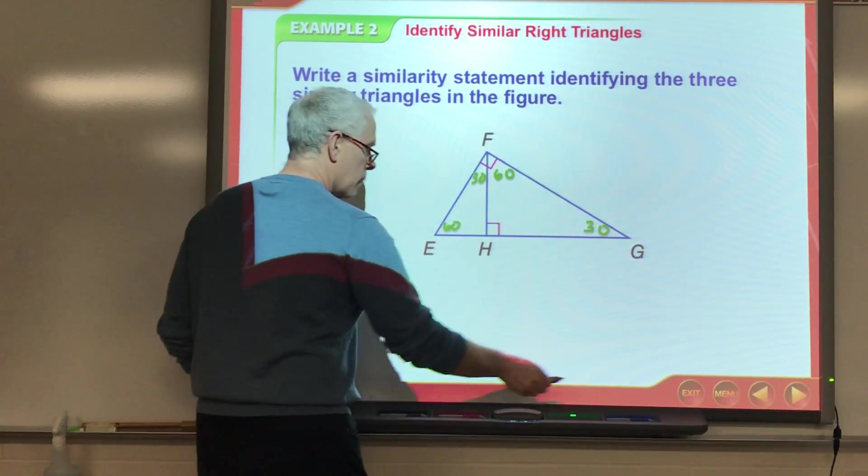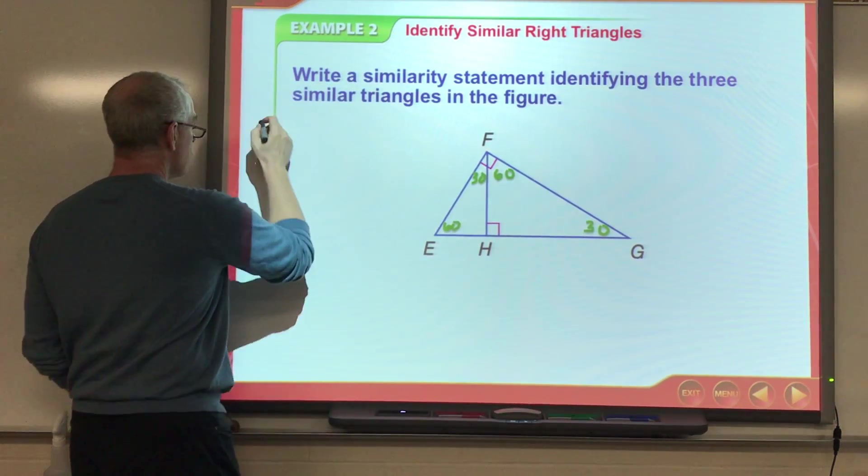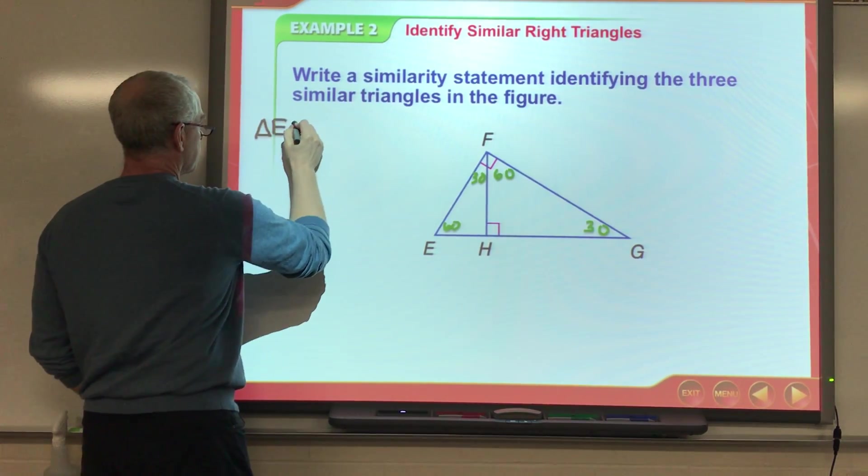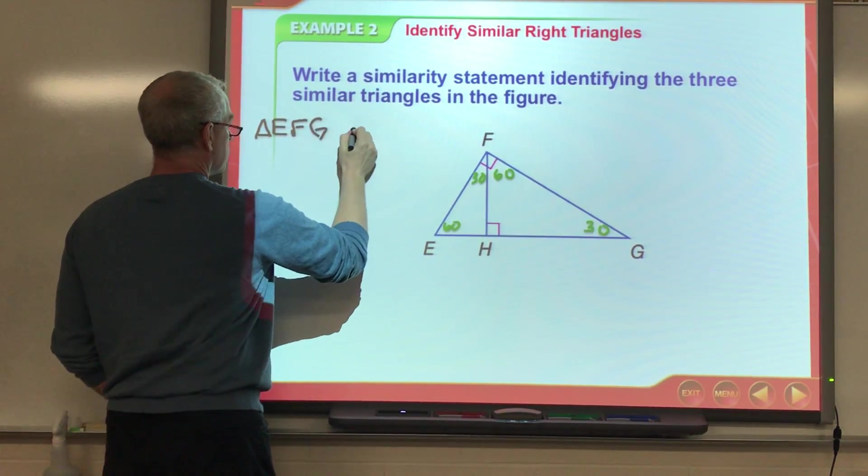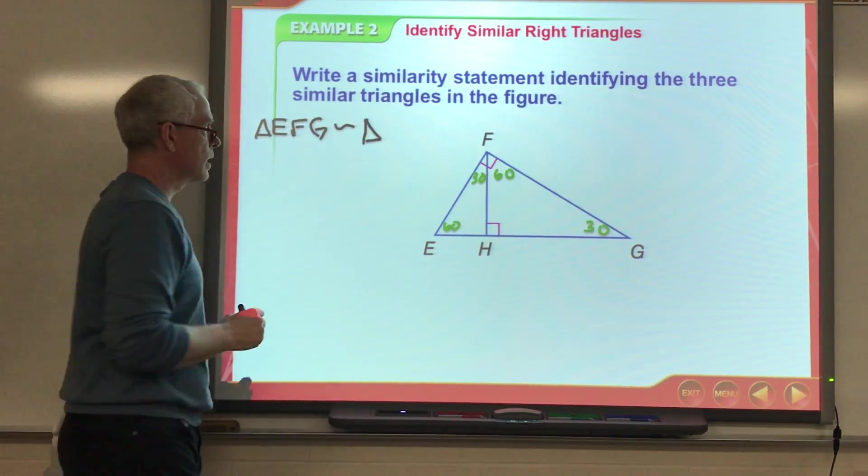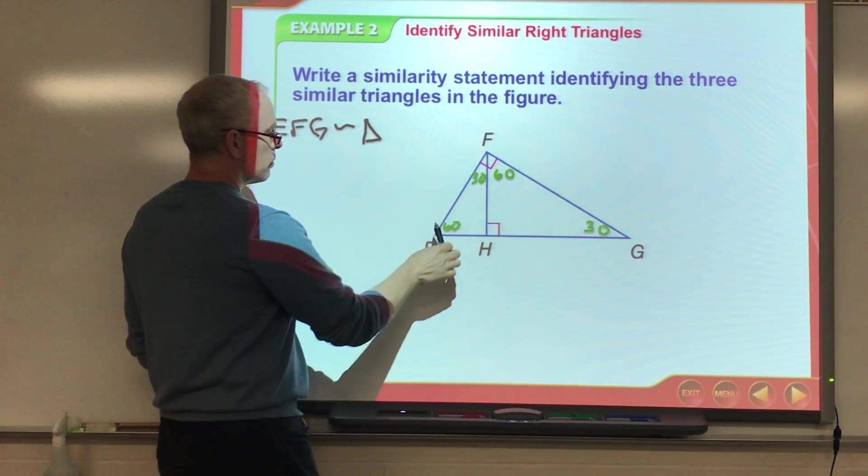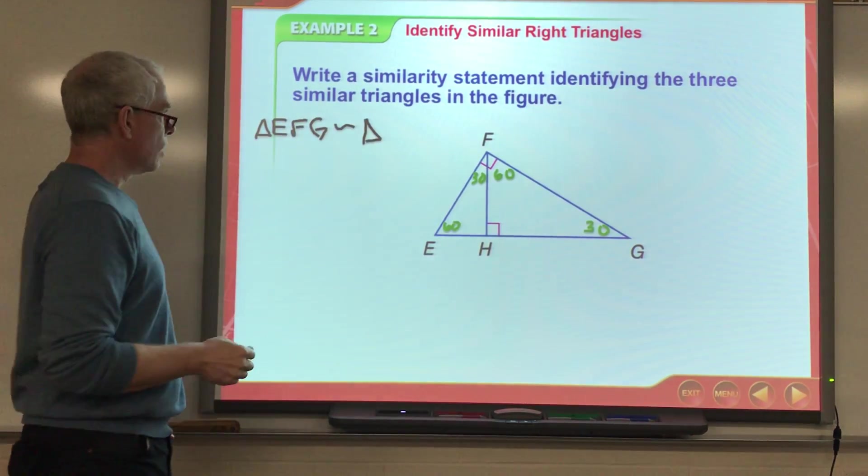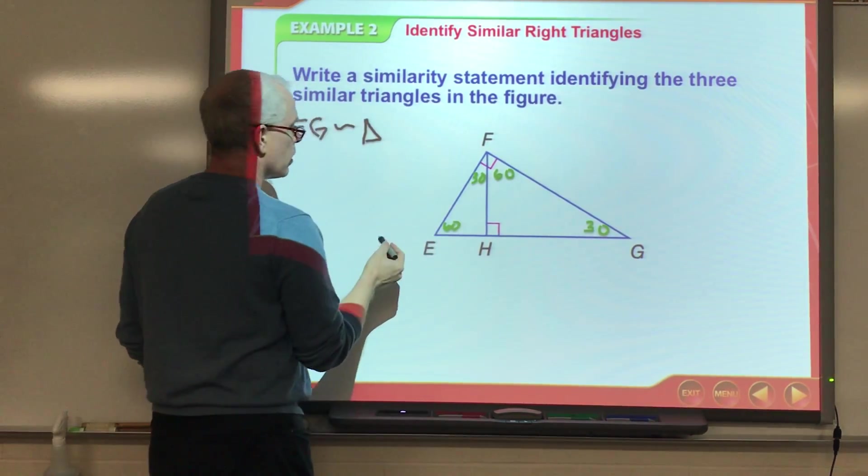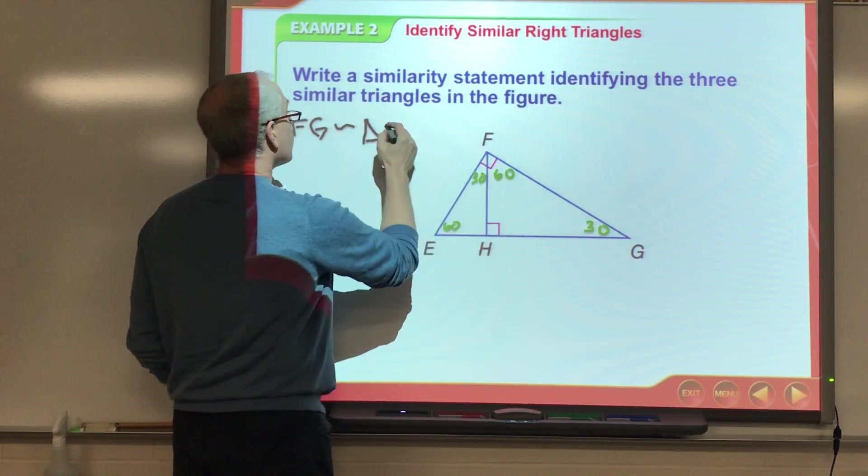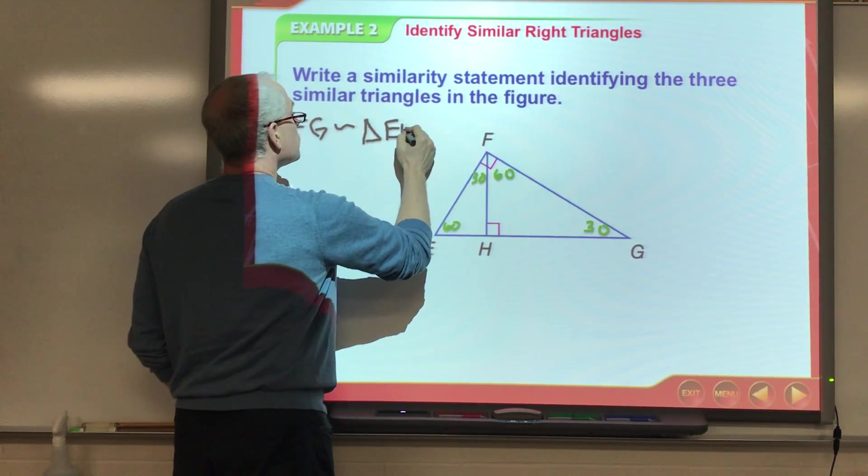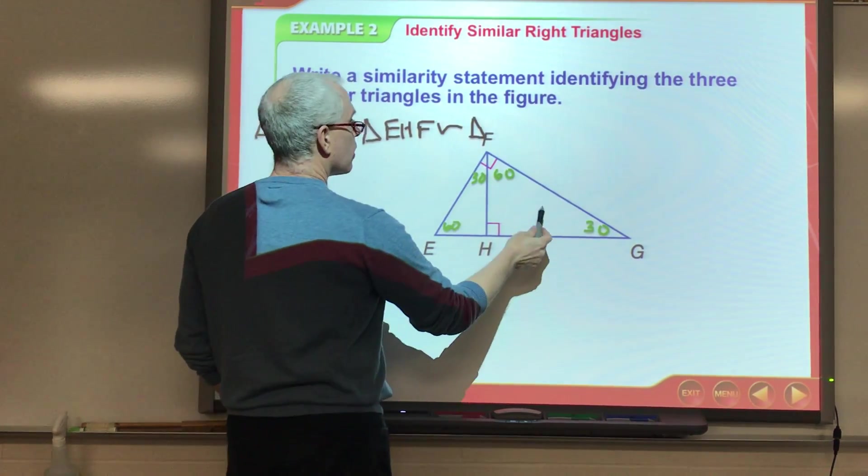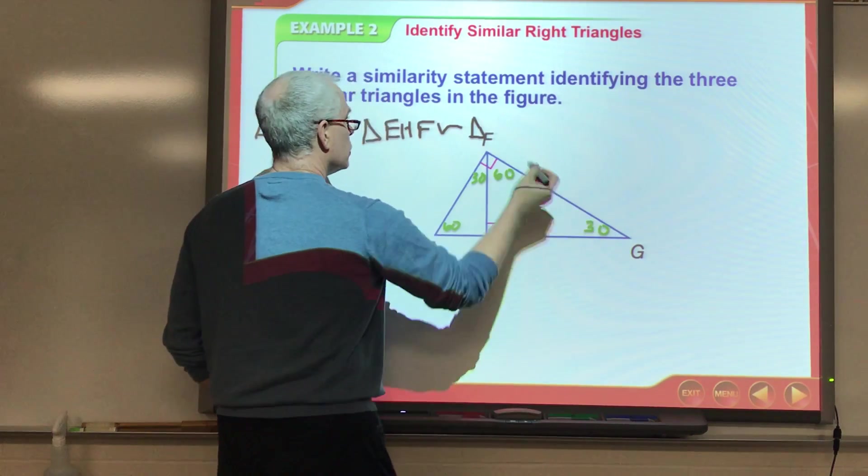Okay, so when I write my similarity statement, I start with the big one. So, let's go EFG. Okay, now when I say EFG, that was 60 degrees, 90 degrees, 30. So, 60, 90, 30. Well, in the triangle on the left, if I want to go 60, 90, 30, that's going to be EFG. And if I want to go 60, 90, 30 with the triangle on the right, that's going to be FHG.